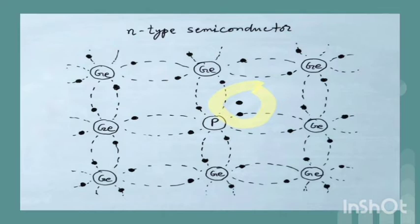At room temperature in N-type semiconductor, as some electrons shift to conduction band leaving the same number of holes in valence band, the overall number of free electrons in conduction band is more than the number of holes in valence band due to extra electrons provided by the impurity atoms. Therefore, in N-type semiconductor, electrons are the majority charge carriers and holes are minority carriers.